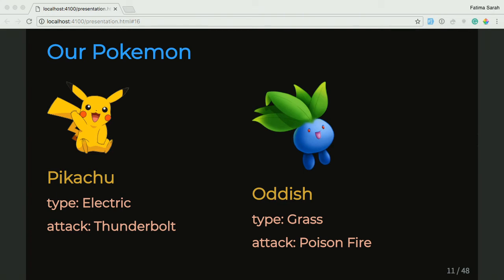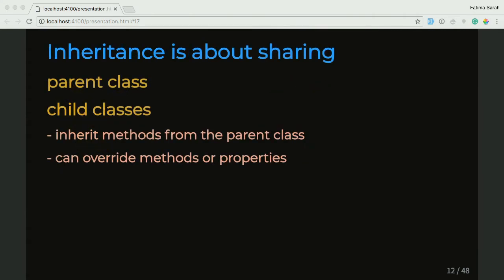But how do we modify our Pokemon class to account for all these different types we're going to encounter on our journey? There is a concept for this, and we call it inheritance. Inheritance is about sharing. Generally, you have a parent class and a child class that inherits functionality from that parent class and can also override functionality that you get from that parent class.